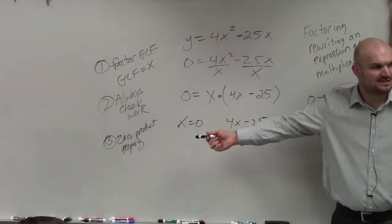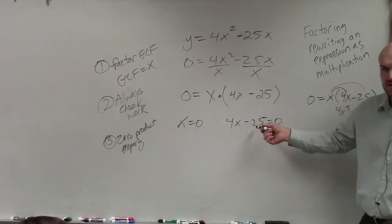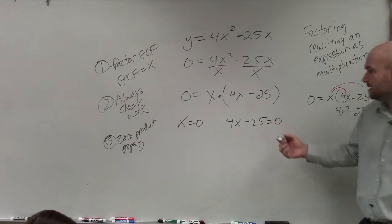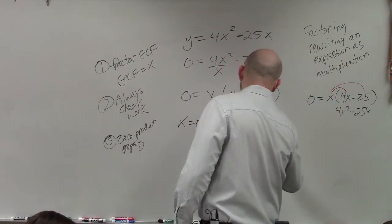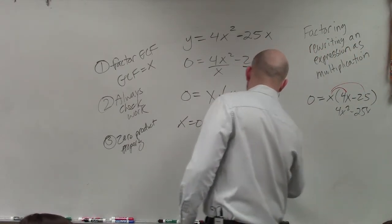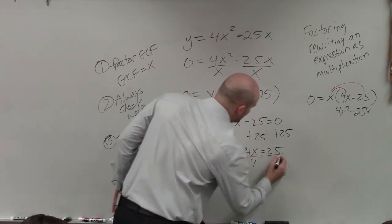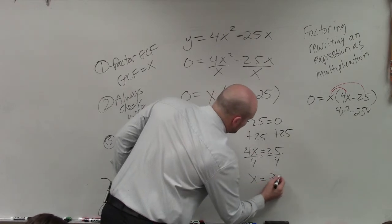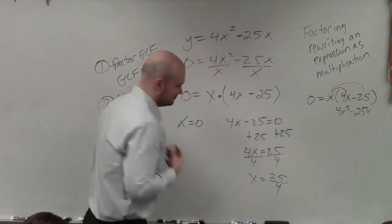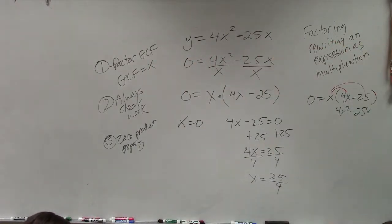Now this, obviously, x is equal to 0. That works. And then here, can we solve for this? Yes. Just add 25 to both sides. And then divide by 4. x equals 25 fourths. And therefore, you guys can see your final answer.